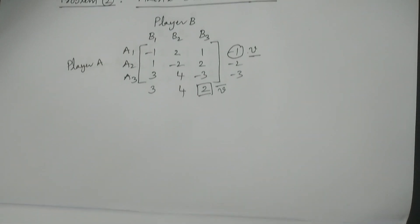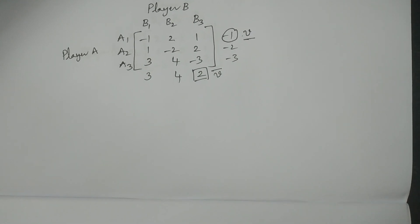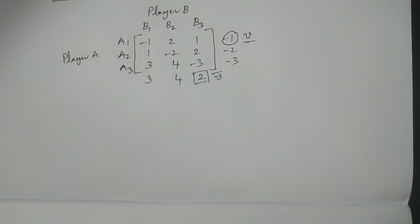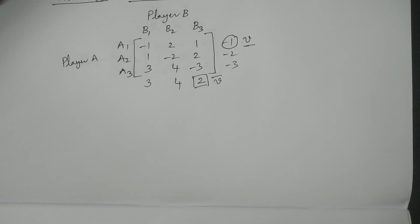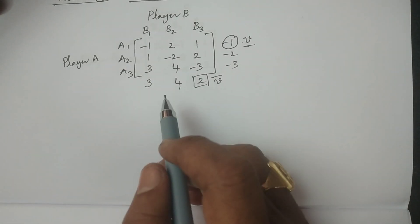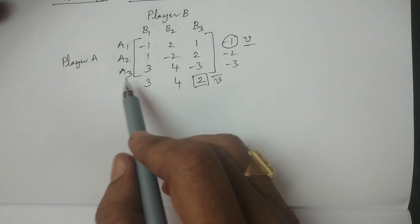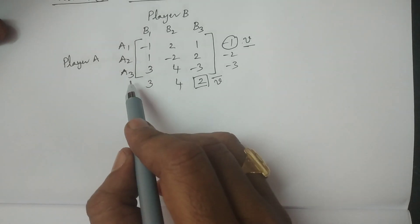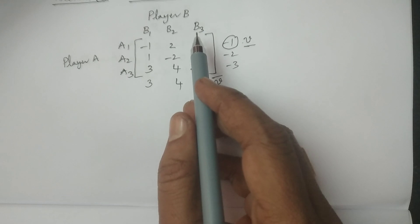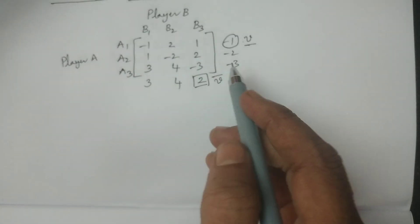Hence we have to apply a method. Here I consider the matrix oddments method. First check whether it is a square matrix or not — yes, because player A has three strategies and player B also has three strategies, making it a three-by-three square matrix.